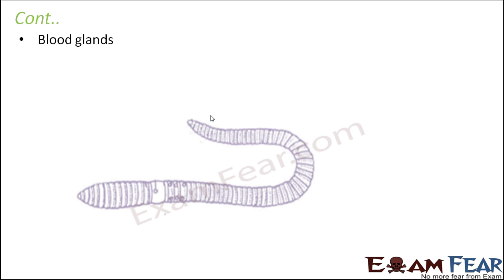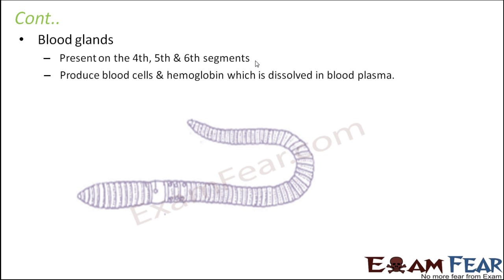One more thing to mention here is the blood glands. Since we have spoken about blood vessels, heart, and circulation, let us also talk about blood glands. These are organs present on the fourth, fifth, and sixth segments of the earthworm body. They produce blood cells and hemoglobin, which is dissolved in blood plasma. So the blood cells circulating throughout the body of the earthworm are generated by these blood glands.